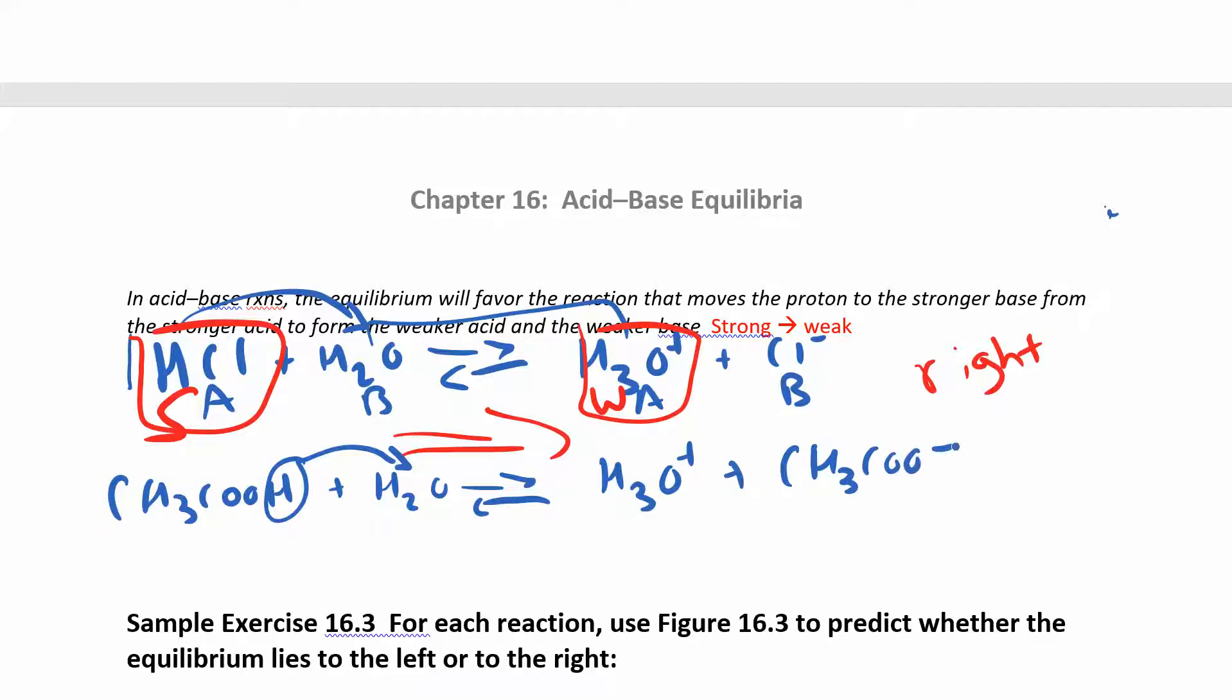Okay, so if this is the acid and this is the base, and again, I knew that was the acid because it's a carboxylic acid, that hydrogen. You see that COOH group? That's the hydrogen that comes off. This guy has to be the base, which means hydronium is the conjugate acid again, and this is our conjugate base.